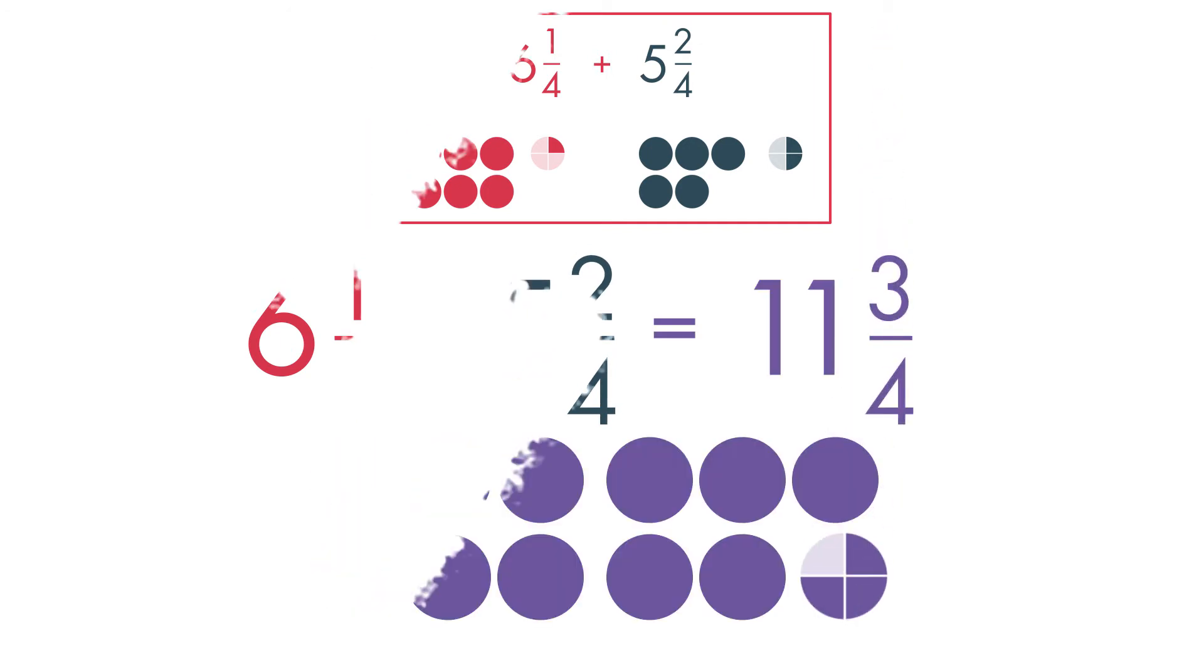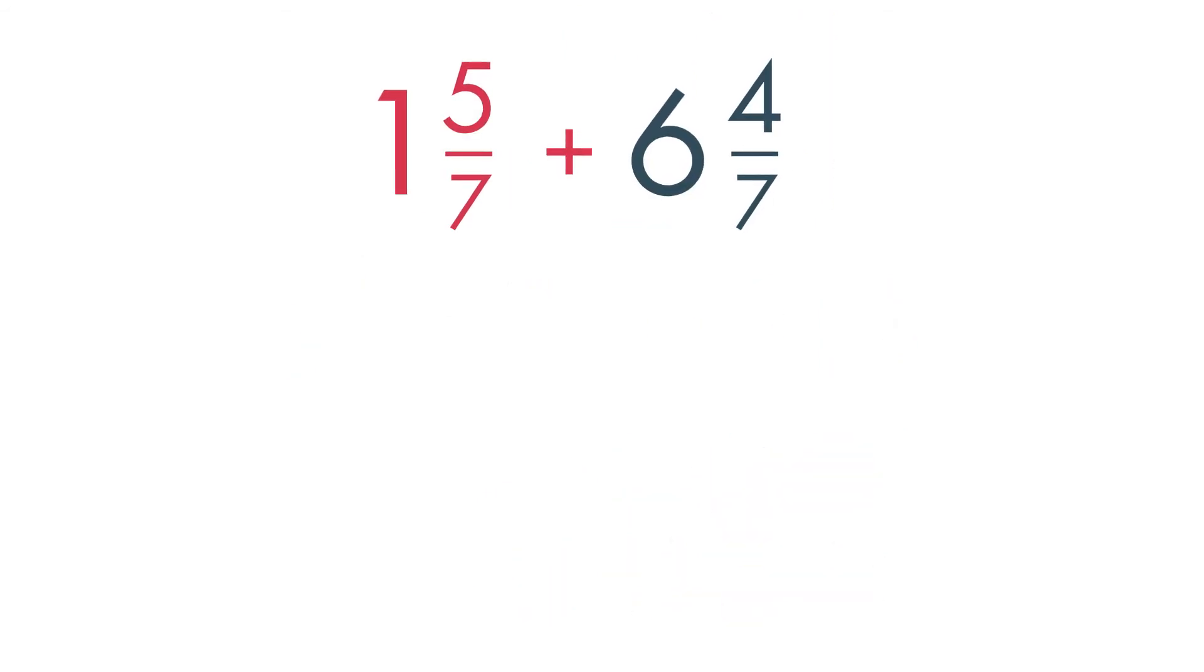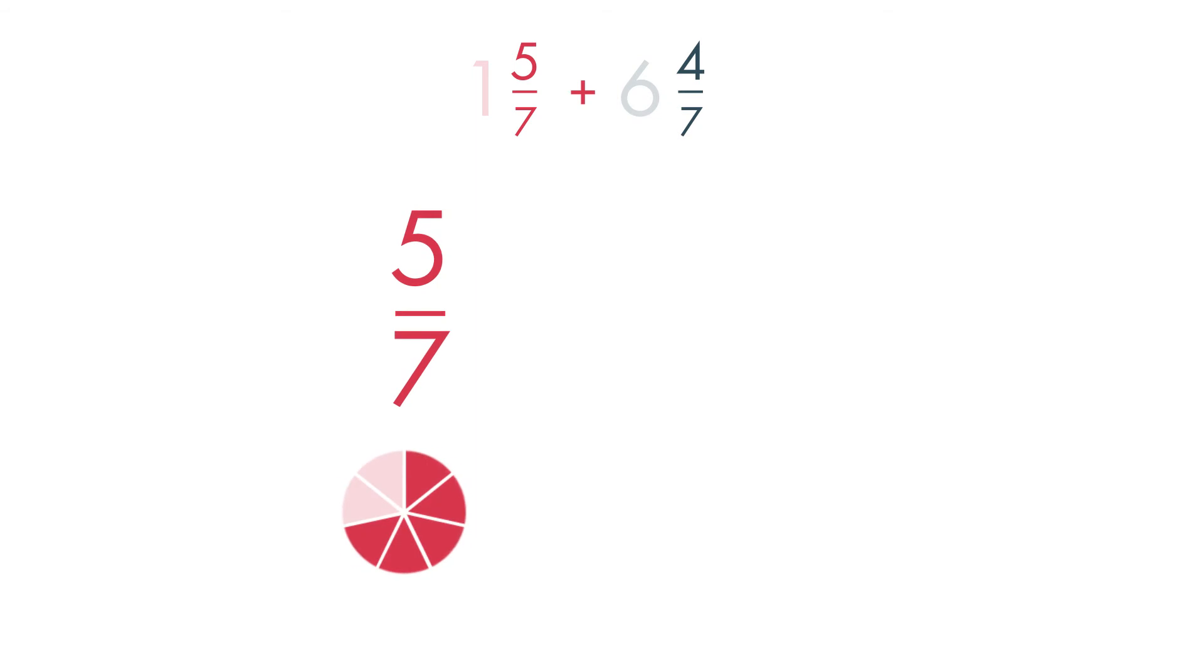Now, let's solve another problem adding mixed numerals. One and five-sevenths plus six and four-sevenths. Add the fractions first. Five-sevenths plus four-sevenths equals nine-sevenths.